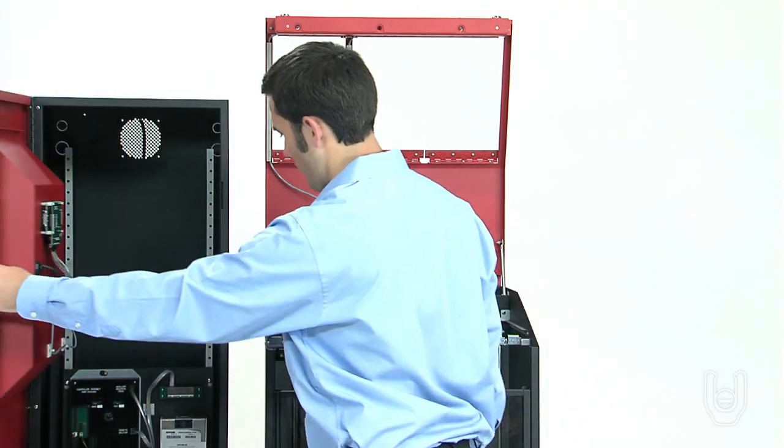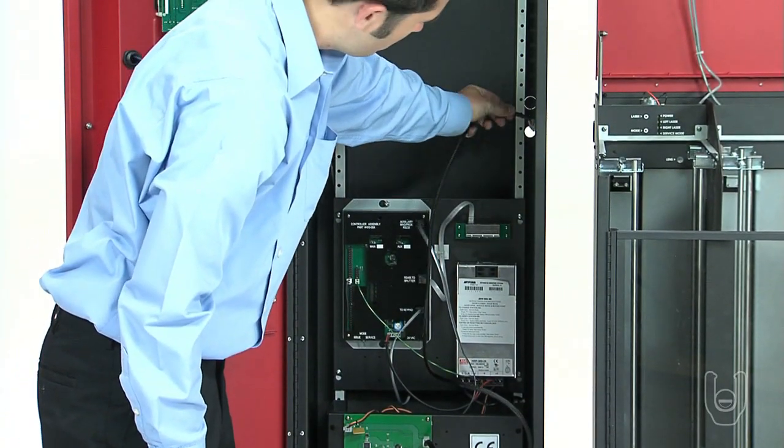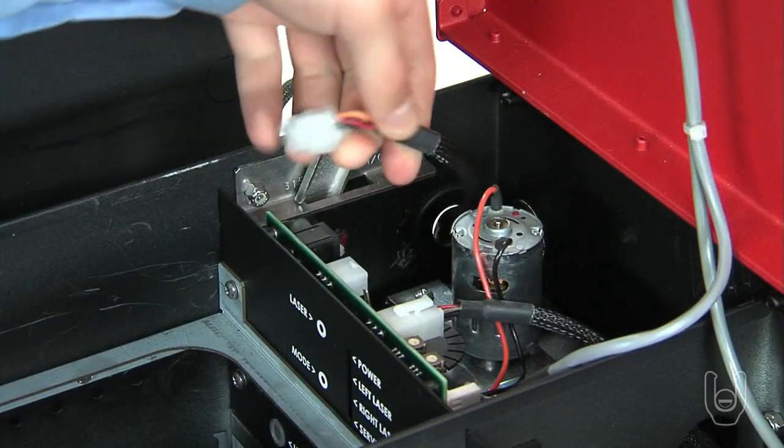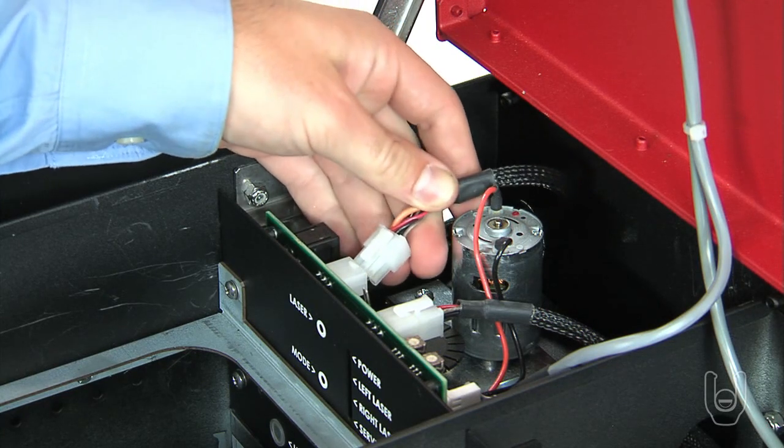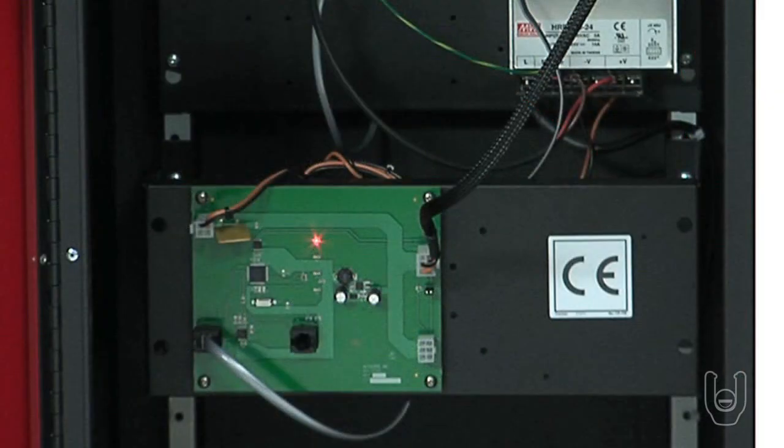Next, locate the long tower bus harness inside the auto crib control tower. Route one end of the cable through the grommet in the control tower and connect it to the available slot in the first motor controller board inside the first cabinet. The other side will connect to the L of N multiplexer board or MUX in the control tower.